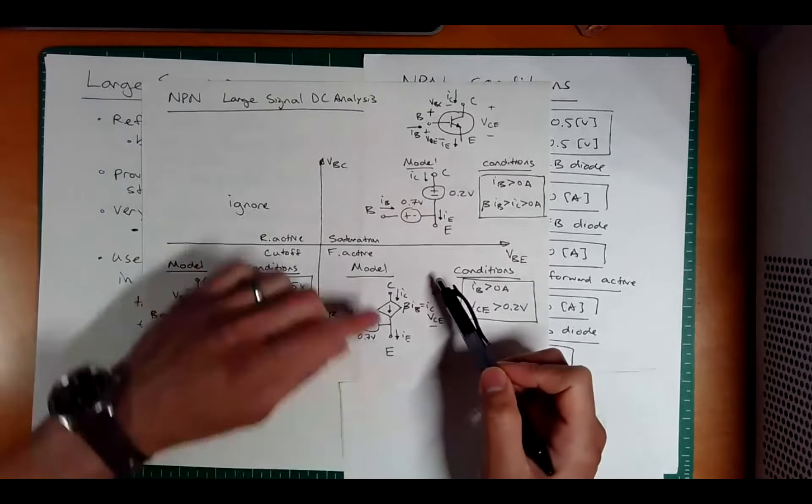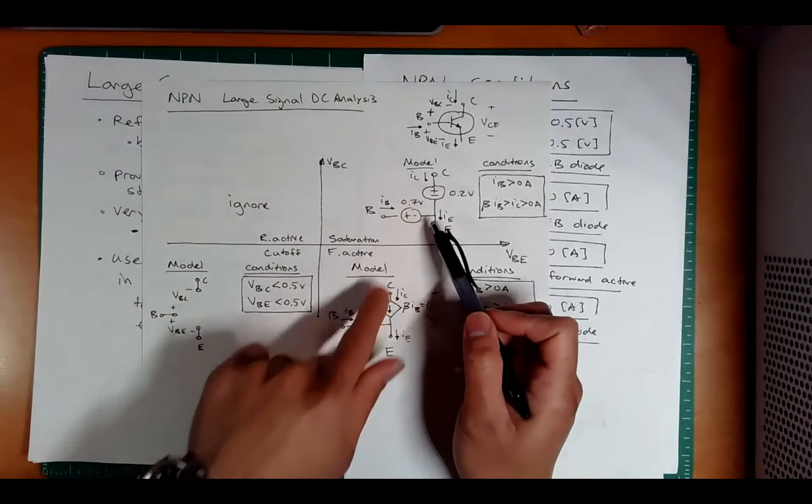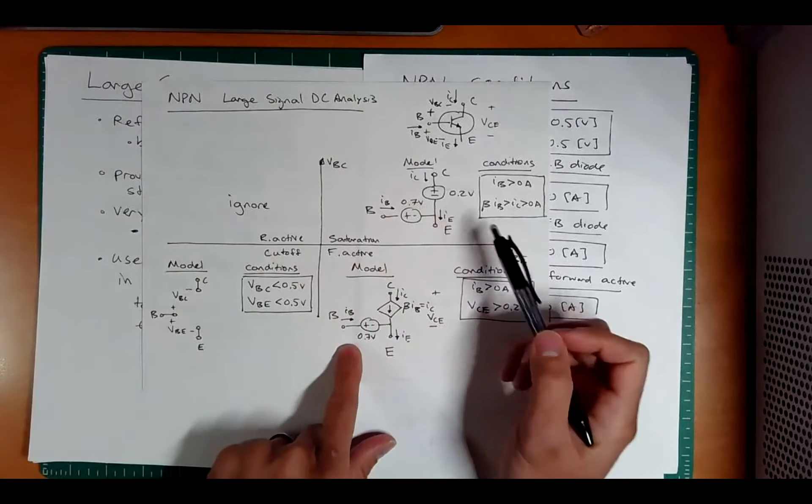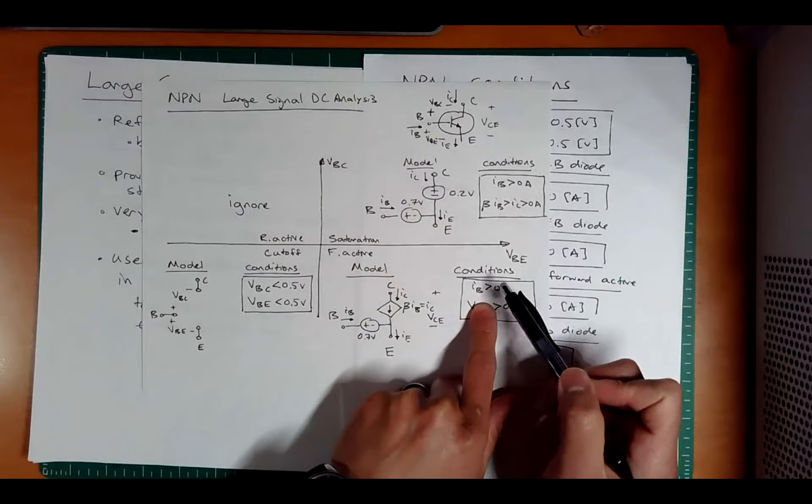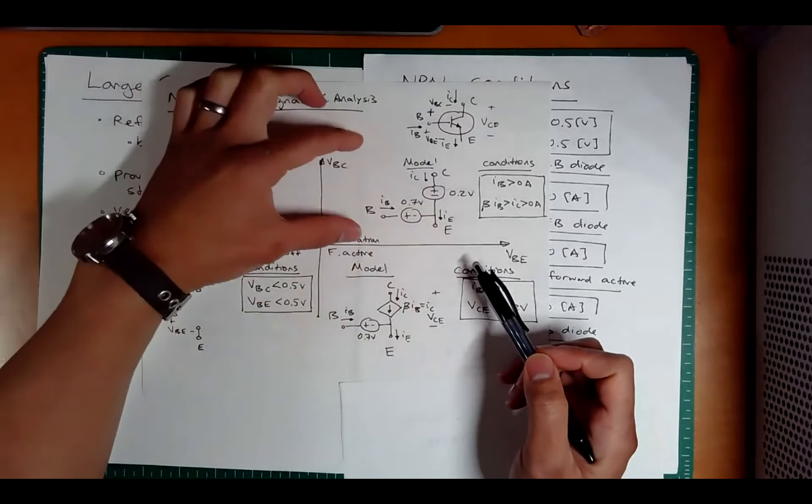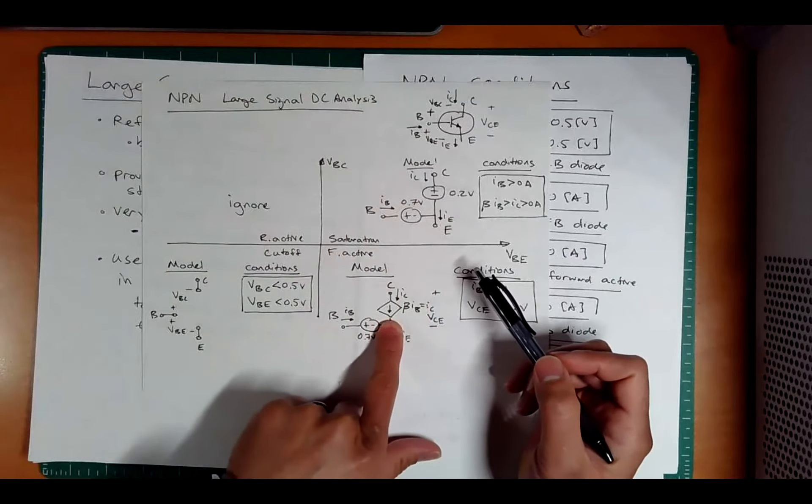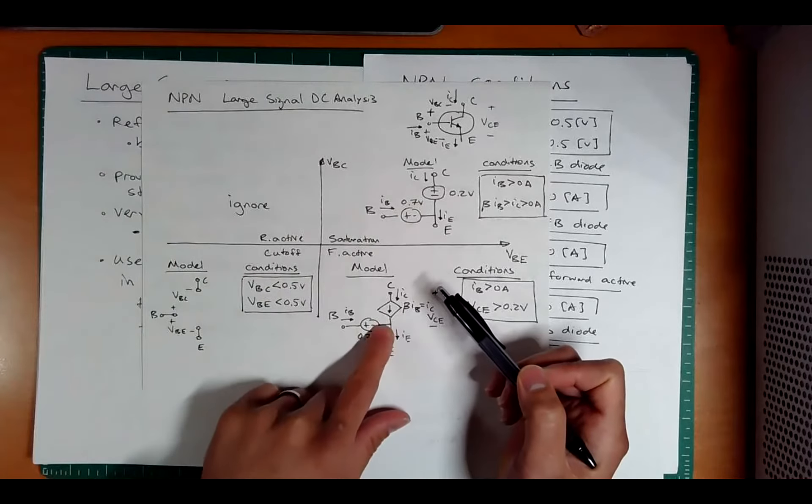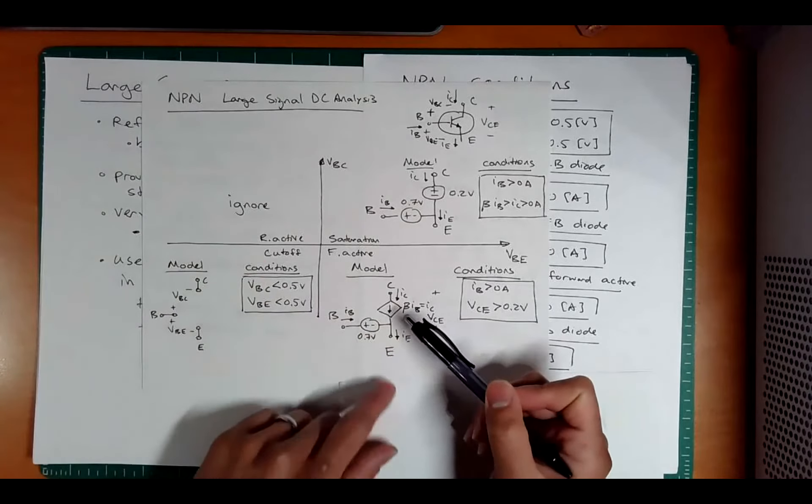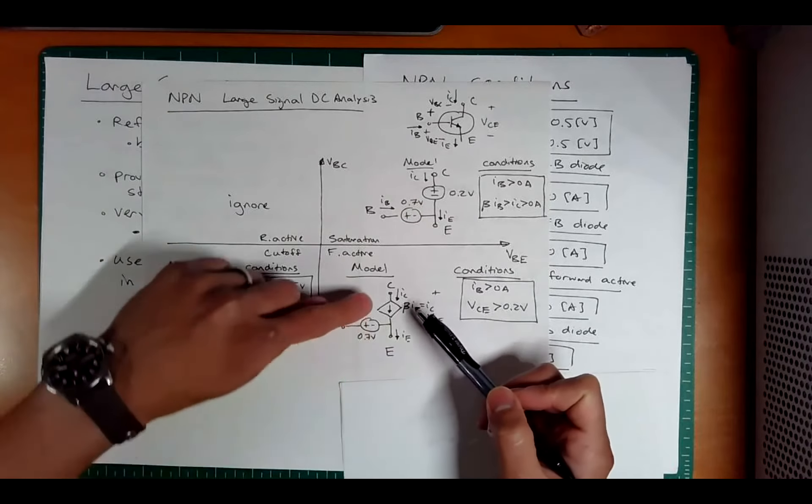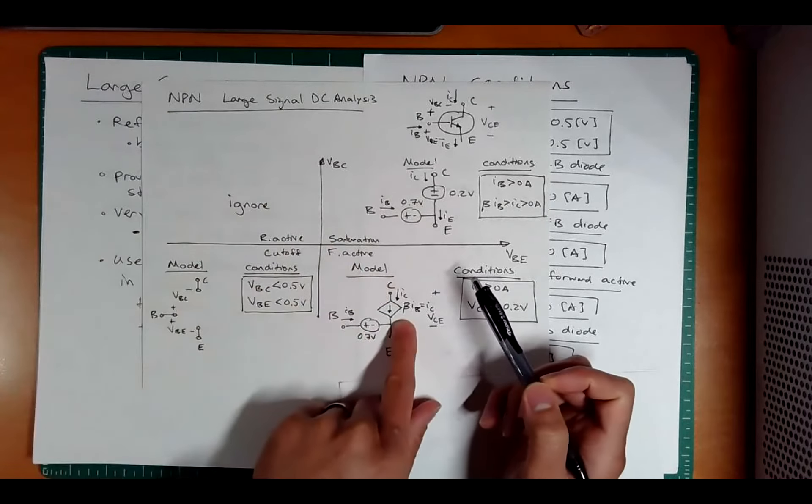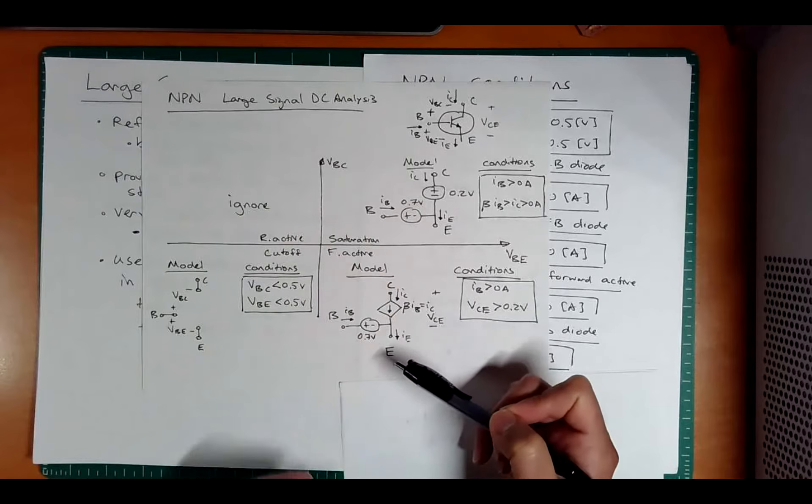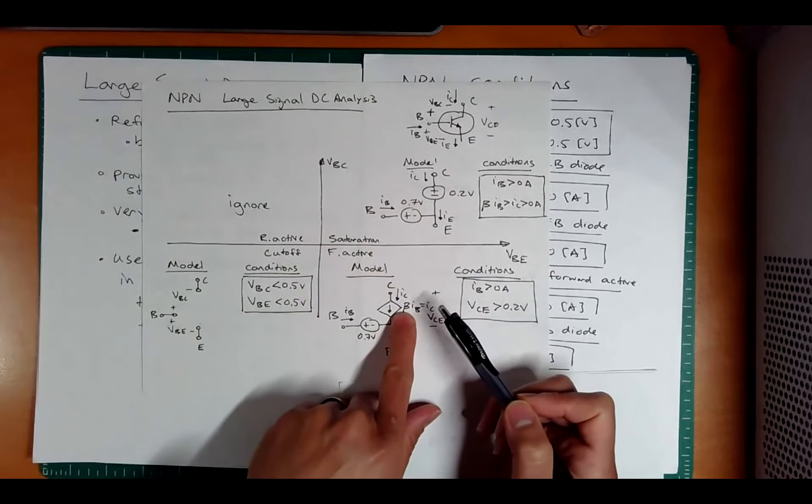Now in the forward active model, notice this part is still the same, because this is still acting like a PN junction diode. In both of these, they're in the on state. This is where it gets a little bit complicated. We're modeling with a current dependent current source. And we've seen this back in ET250. It should make sense why this is modeled as such, because what we're saying is that IC is equal to IB times some gain. This is a perfect situation to use this model.